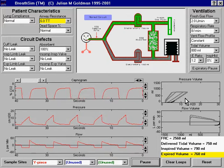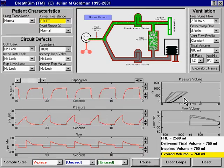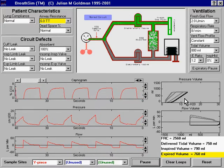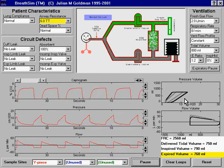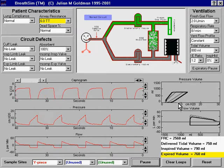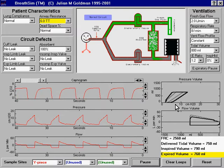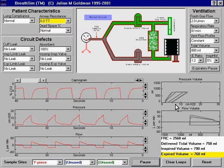That means that the pressure required to generate the same tidal volume has increased. The slope of the inspiratory portion hasn't changed because the slope reflects, of course, the compliance of the lung, which hasn't changed.